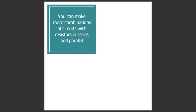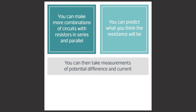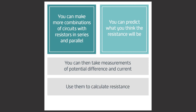You can make more circuits with combinations of resistors in series and parallel. You could predict what you think the resistance will be using the rules we've learnt, then take measurements of potential difference and current and calculate resistance to see if you were correct.